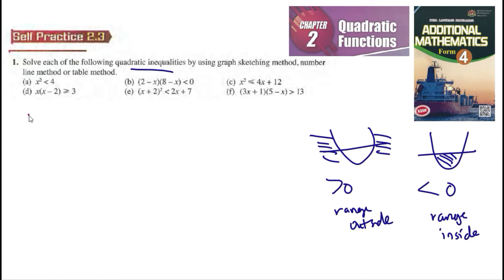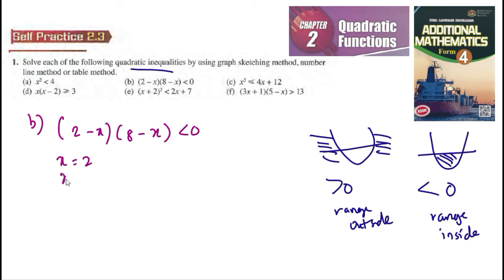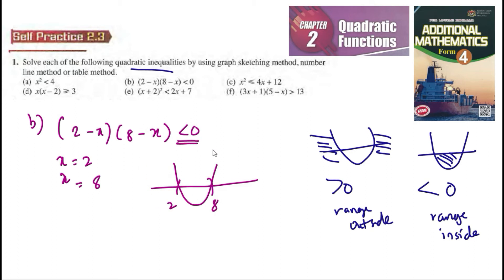For part b, (2 minus x)(8 minus x) is smaller than 0. We get x equals 2 and x equals 8. Since it is smaller than 0, the range is inside, so x is in between 2 and 8.